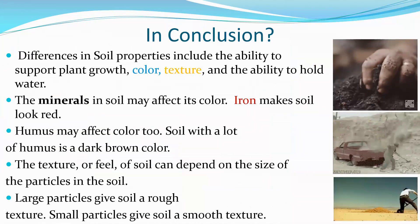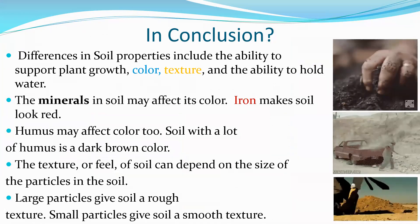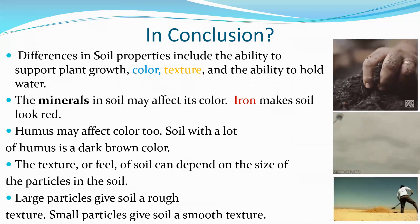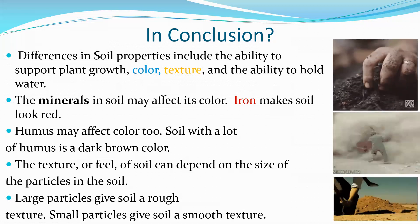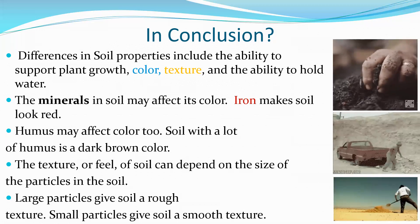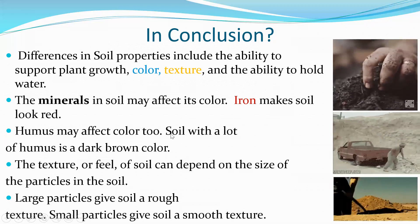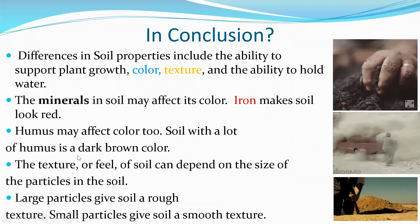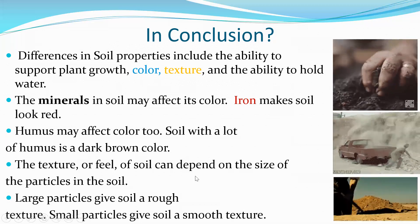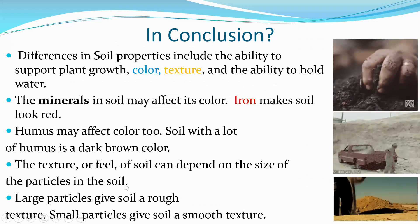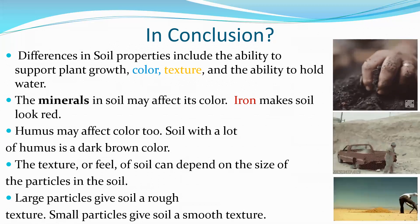In conclusion, differences in soil properties include the ability to support plant growth, color, texture, and the ability to hold water. The minerals in soil may affect its color — iron makes soil look red. Humus may affect color too. Soil with a lot of humus is a dark brown color. The texture or feel of soil can depend on the size of the particles; large particles give soil a rough texture and small particles give soil a smooth texture.